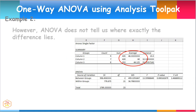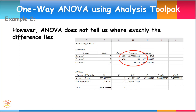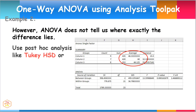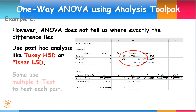However, ANOVA does not tell us where exactly the difference lies. Most statisticians use post-hoc analysis like Tukey's HSD test or Fischer LSD, while some use multiple t-tests to test each pair. Although most avoid using the multiple t-test, since it has a higher probability of making at least one Type I error with each t-test used in the analysis.